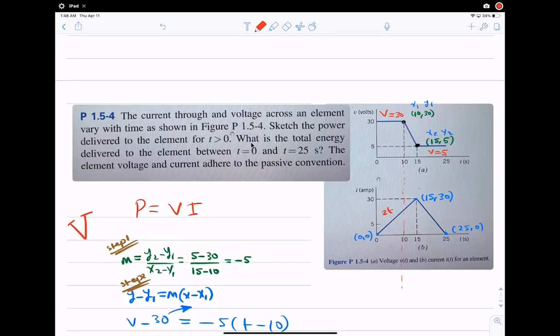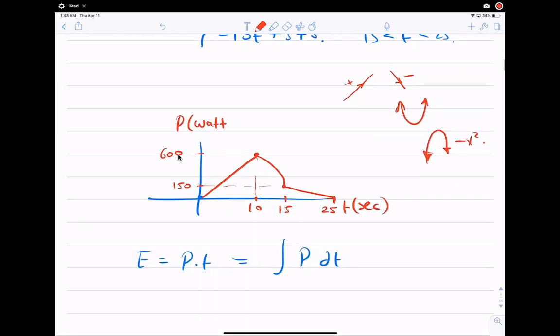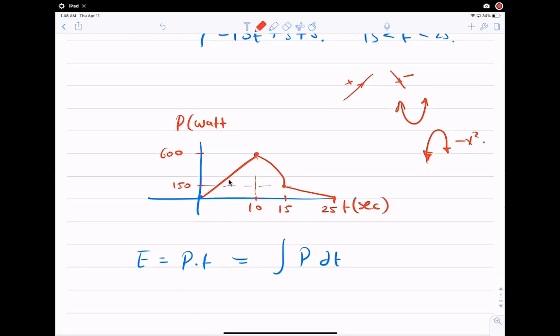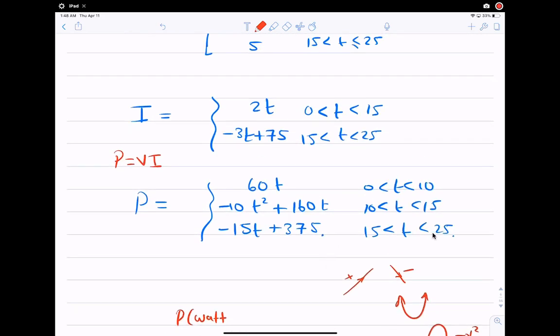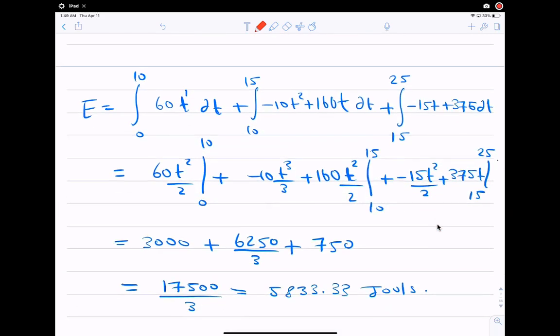The second part, he's saying what is the total energy delivered? We know that the energy is power times t, but if we have a variable power, that means it's integration. Always, the multiplication is integration. Integration, the power with respect to t. From where to where? From 0 to 25. That means I have to integrate this from 0 to 10 plus this equation from 10 to 15 plus this equation from 15 to 25. From 0 to 10, the 60t. How would I integrate? You all know that if I have a polynomial x to the power n, you add to the power a 1 and then you divide over the power.